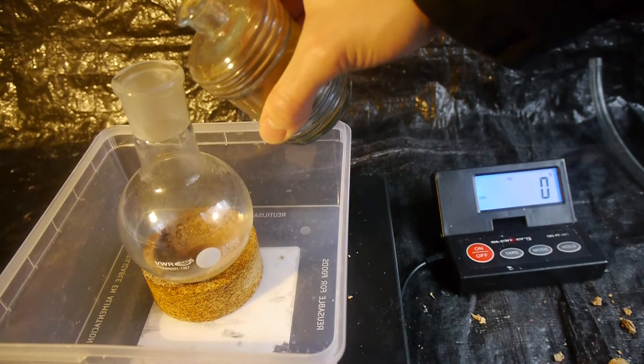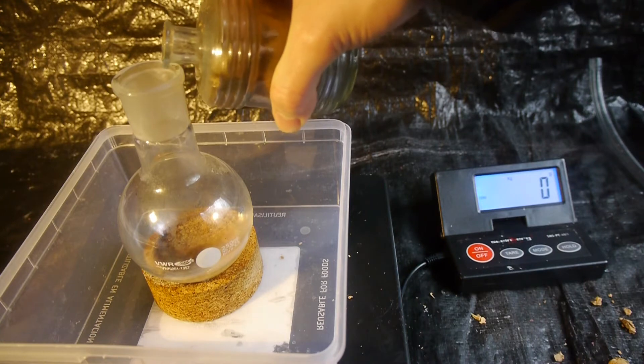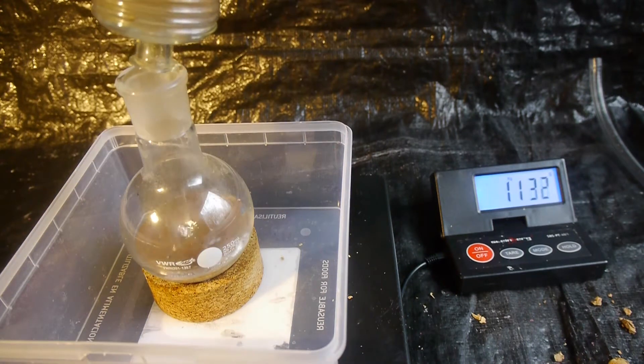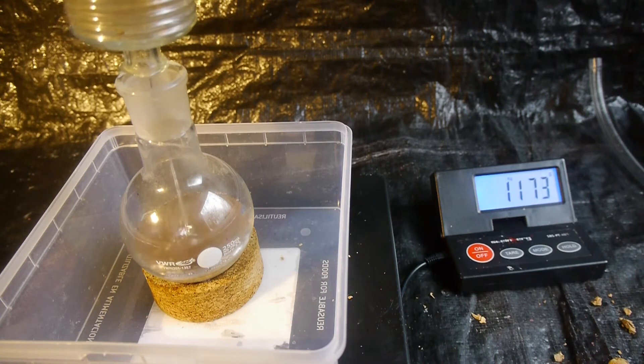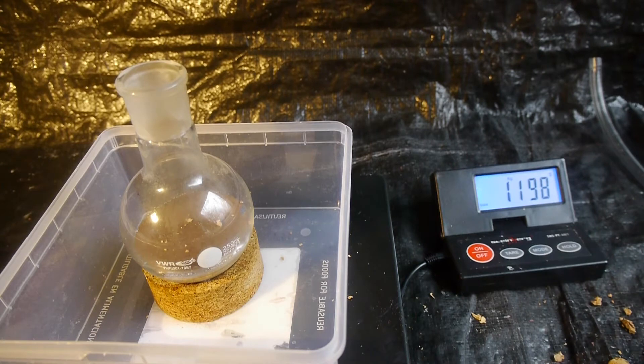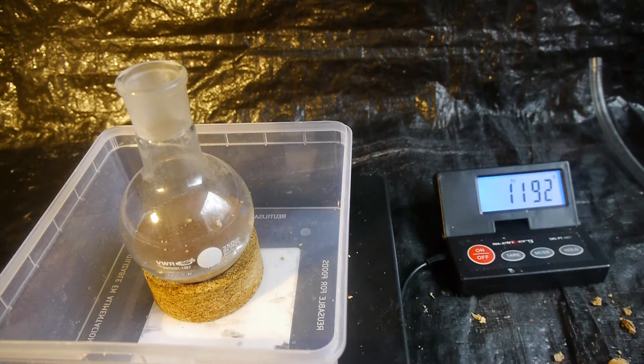And now let's pour the content into this flask. Okay, so it doesn't look like a lot but because of the high density of mercury and gold, this is more than a kilogram. Which I find quite impressive.